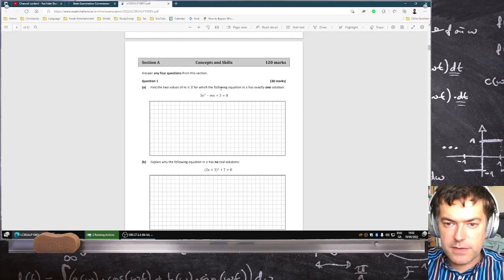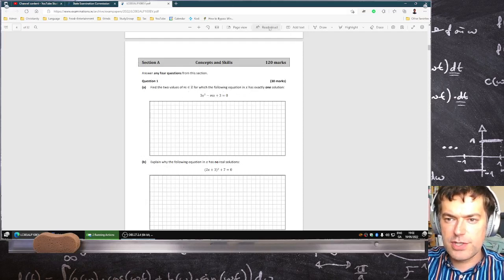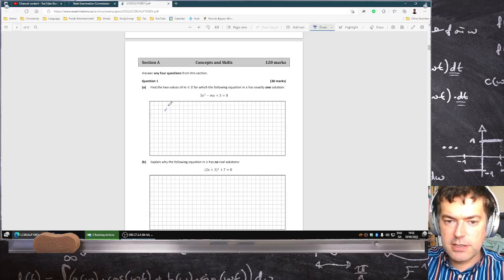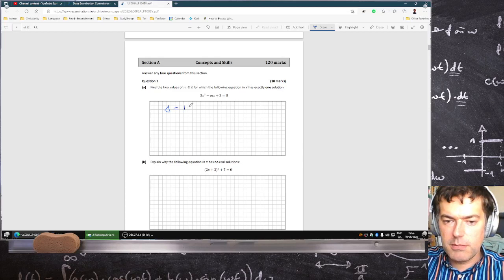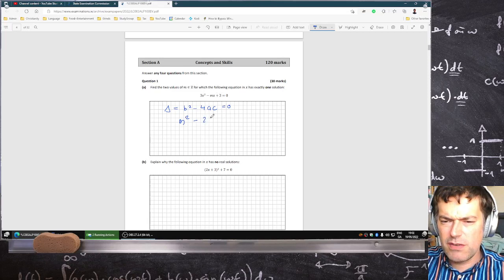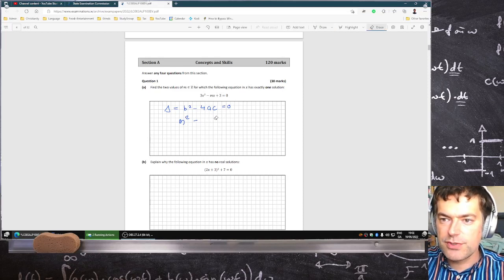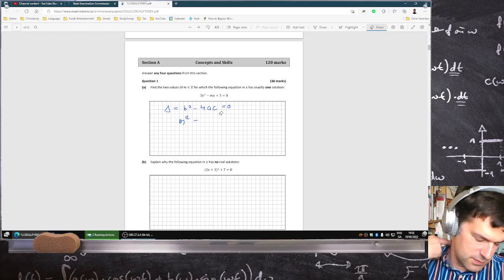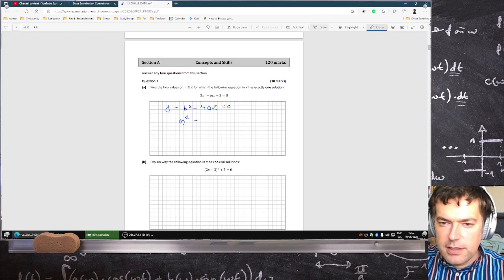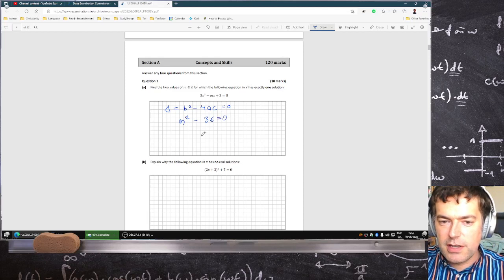Find the two values of m for which the following equation in x has exactly one solution. Okay, so that's the discriminant, which is b squared minus 4ac. That has to equal zero. So b squared, that's m squared, minus 4ac. That's 24, isn't it? No, it's not. 4 times 3 times 3, 36. Which is better because that's a square number. So you get m is plus or minus 6. They're the two integer values.